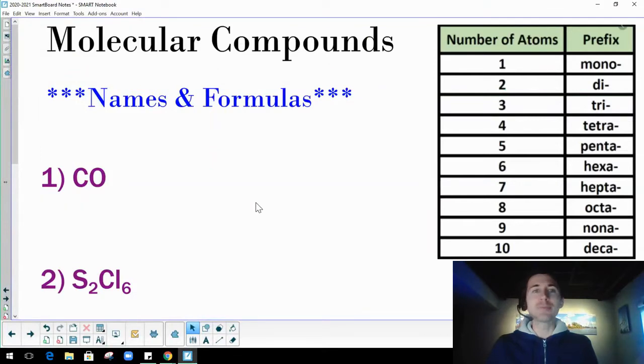So to write names and formulas is actually pretty straightforward. We're going to use prefixes when we do the names. And so we already went over in class all the different prefixes here: mono, di, tri, tetra, penta, hexa, hepta, octa, nona, and deca.